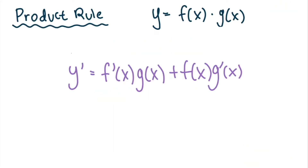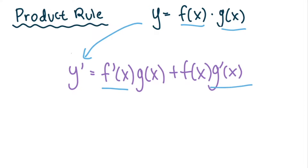Let's talk about product rule. If you are given a function y and it is equal to two functions multiplied together, like f of x and g of x, when you're asked to take the derivative of y, you're going to have to use product rule. So essentially, you are going to have f prime of x, which is the derivative of f of x, multiplied by the function g of x, plus f of x times the derivative of g of x. So that's what the product rule is.